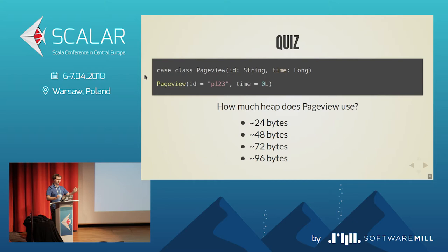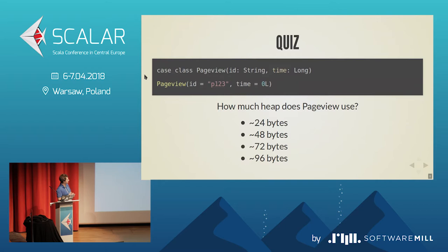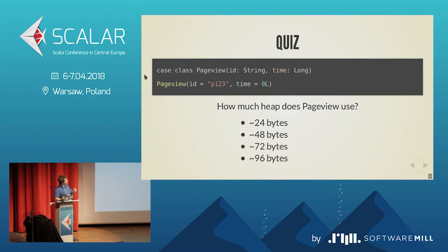We have a couple of options and we have to vote. So, PageView is a JVM class — it has some sort of header, and we know that a four-byte character string can be either four or eight bytes depending on the Java version. We also have eight bytes for the timestamp, so maybe it's close to 24 bytes. Who's voting for 24? There's a single one — the most optimistic person.